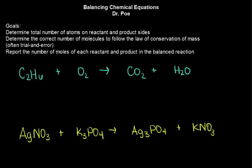In this example, we're going to be balancing chemical equations. The goal is to determine the total number of atoms on the reactant side, on the left side of the arrow, and also on the product side, on the right side of the arrow. And according to the law of conservation of mass, those numbers of atoms should be identical.